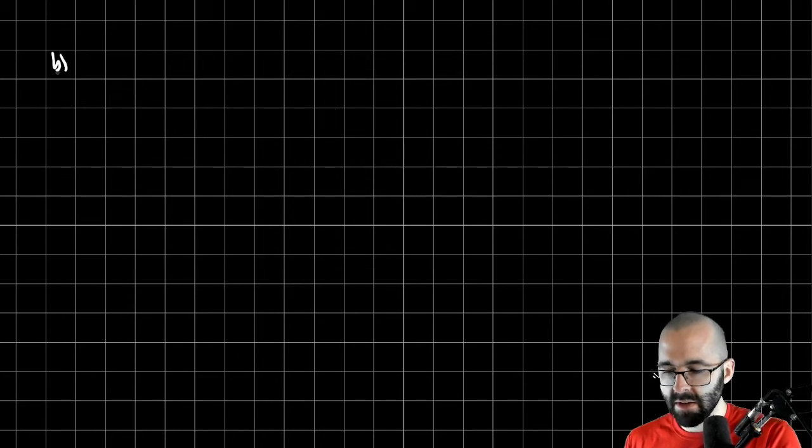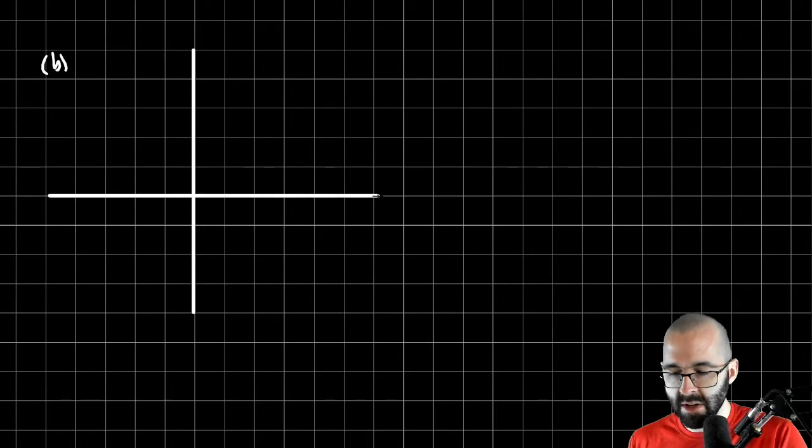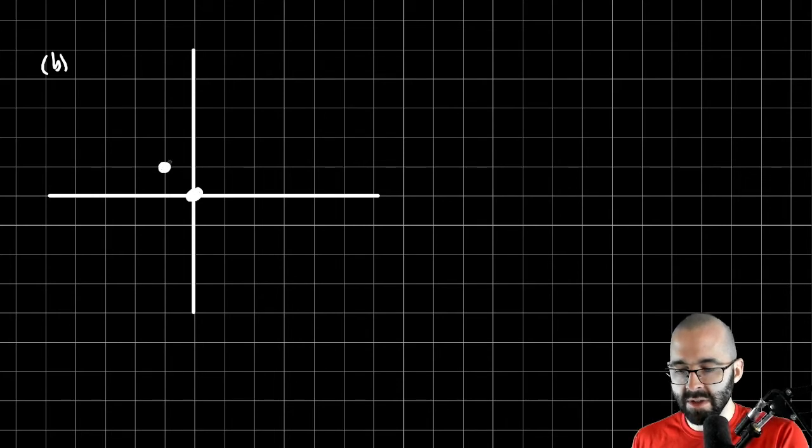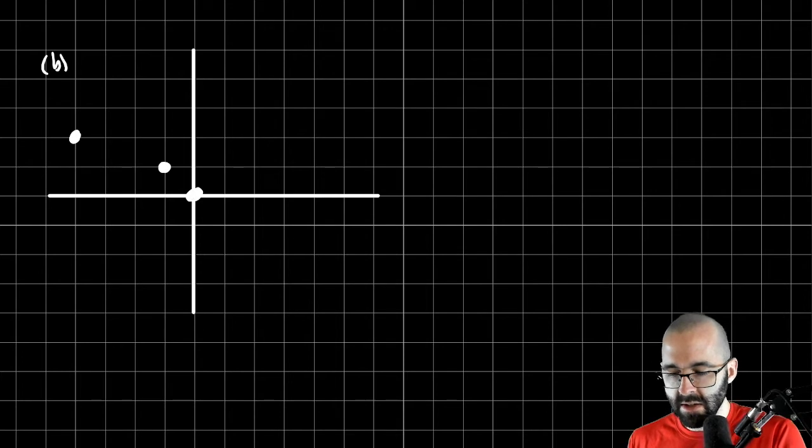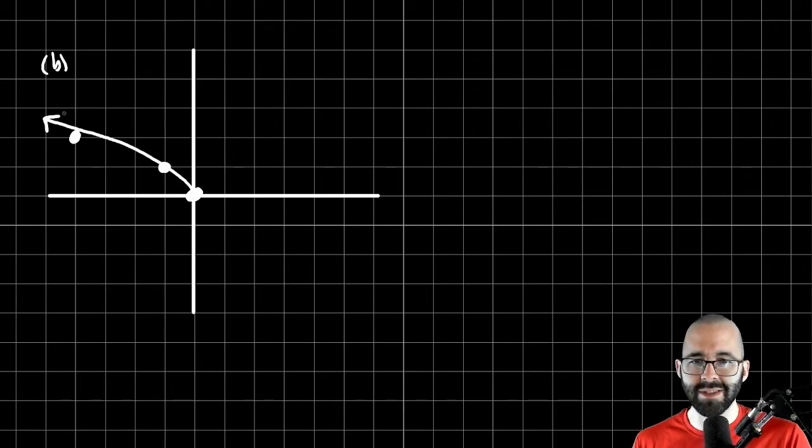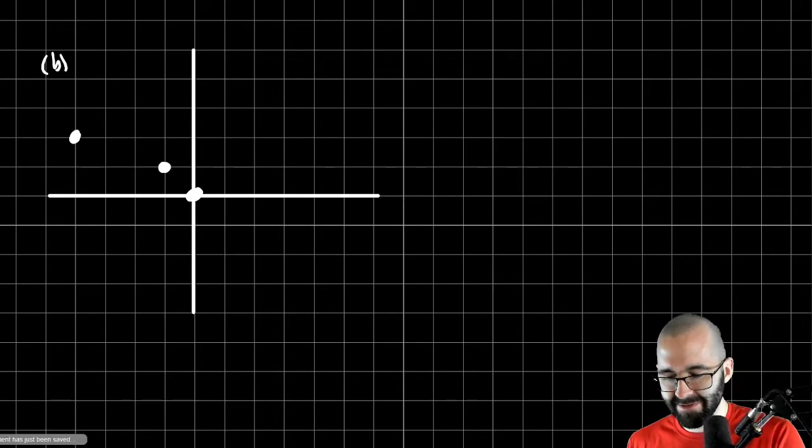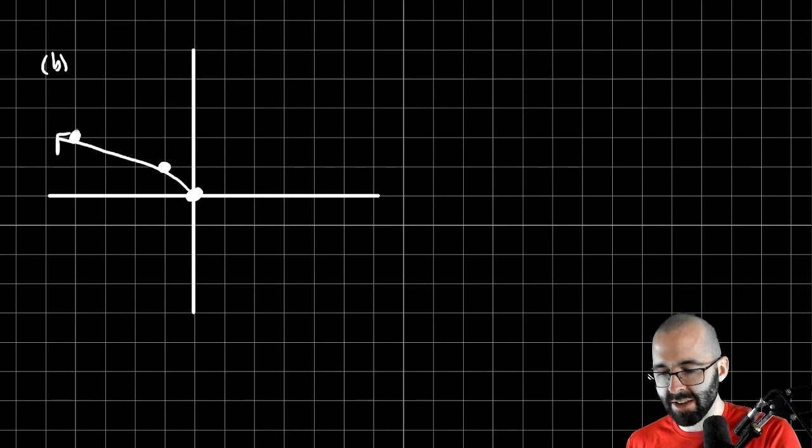Let's do part b. Find a function for an equation for this other graph. Say it starts right here. Goes through this point. Goes through this point. And it looks like this. Pretend it goes through those points. Use your imagination. I'm really bad at drawing this kind of function.